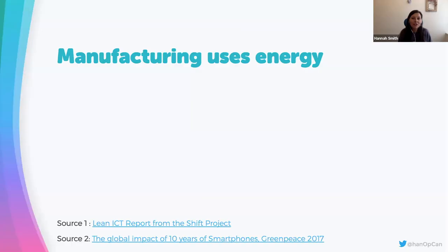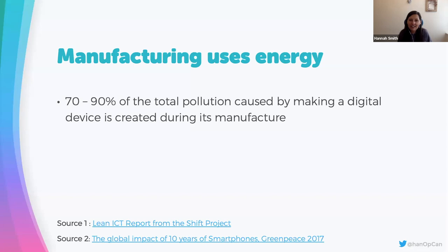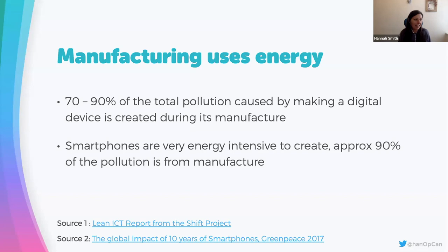Let's talk about the manufacture of tech and the devices we use. Manufacturing uses a lot of energy. It's estimated that on average, between 70 and 90% of the total pollution caused by a device happens during its manufacture. Smartphones in particular are very energy intensive — around 90% of their overall pollution happens during manufacturing.